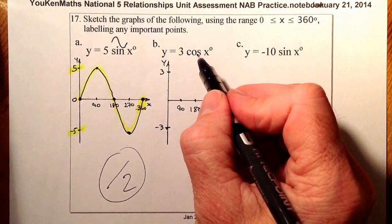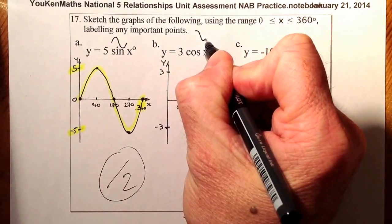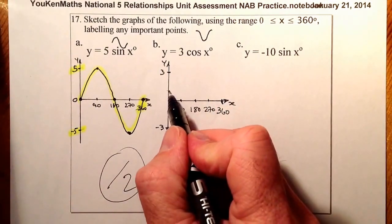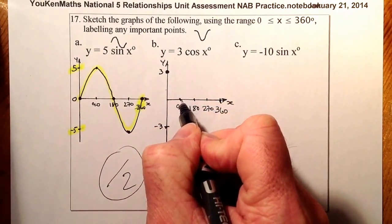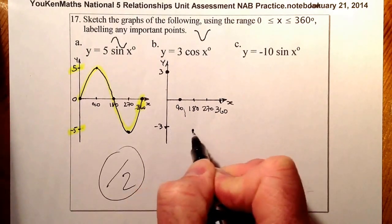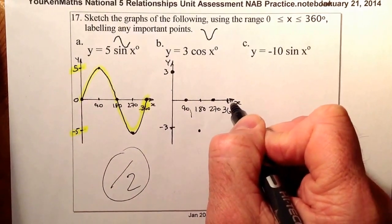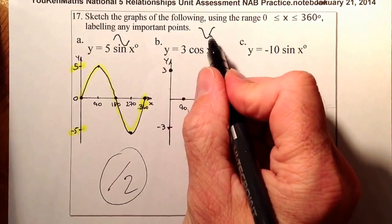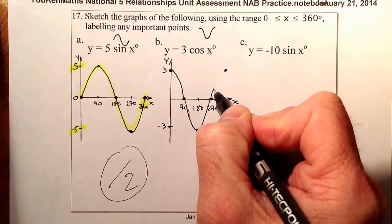The cosine curve is different from the sine curve — it starts up at 1 usually, comes down, bottoms out, then comes back up before repeating. Instead of starting at 1, it's 3 times 1, so it starts up at 3. I'll come back through the x-axis at 90, bottom out at minus 3 at x=180, back up through 270, and finally up to 3 again at 360.